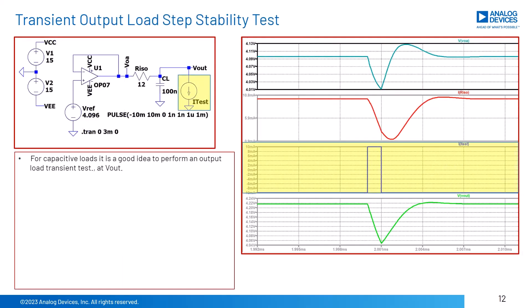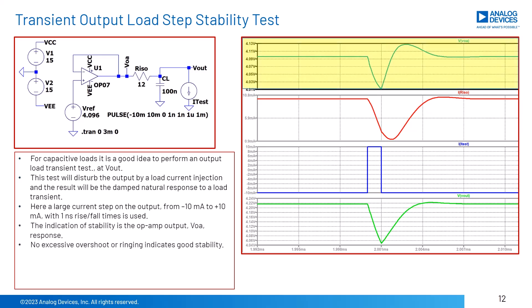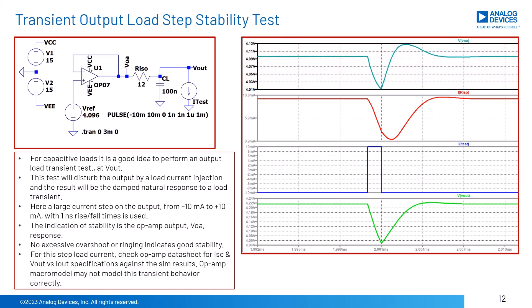For capacitive loads, a load transient test is a good closed-loop check for op-amp stability. This test disturbs the output with a current square wave with fast rise and fall times to show the damped natural response of the circuit to a load transient. No excessive overshoot or ringing is a good indicator of stability, as measured at the output of the op-amp VOA. Check simulation results against datasheet parameters for ISC and Vout versus Iout specifications.